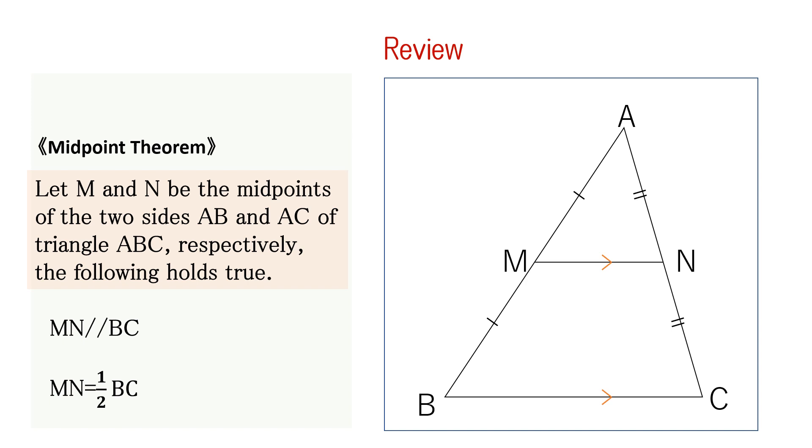In this case, the following two conditions hold true. The line segment MN connecting the midpoints and side BC are parallel. The length of line segment MN is half of side BC.